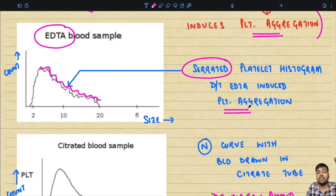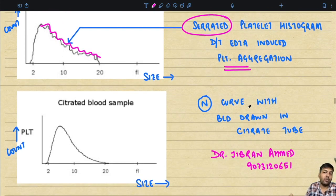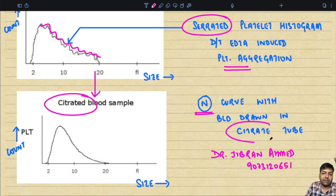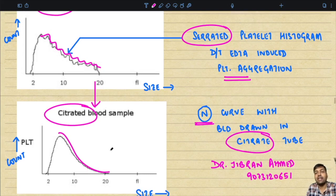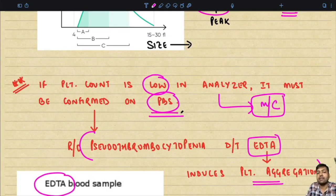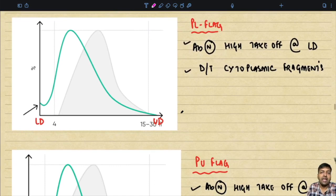To confirm EDTA-induced pseudo-thrombocytopenia: when you examine a platelet histogram from an EDTA-collected sample with platelet aggregation, you will see serrations in the platelet histogram curve. If you instead collect blood using a citrate anticoagulant, the curve returns to normal with no serrations. This proves that EDTA was falsely inducing pseudo-thrombocytopenia by causing platelet aggregation. Therefore, whenever the machine gives a lower count, always confirm on the peripheral blood smear.